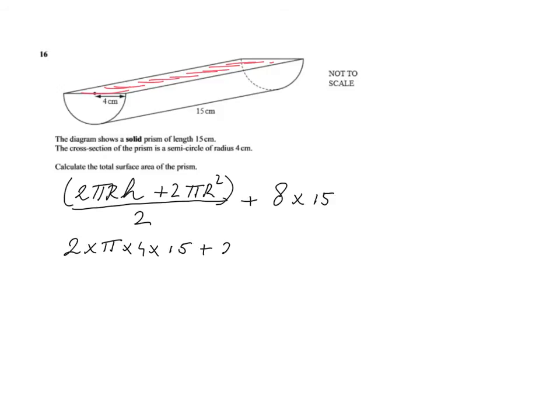Plus 2 times π times 4 squared. And all of that divided by 2. Let's put some brackets around that. Plus 8 times 15, that's 120. Okay.